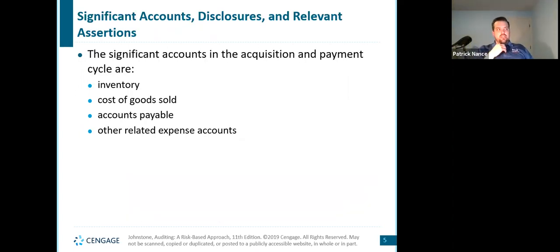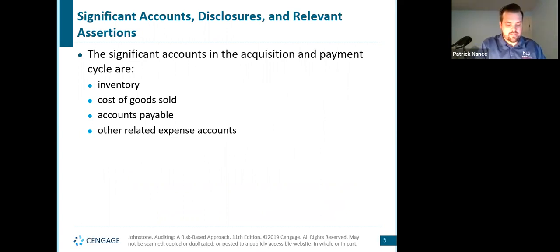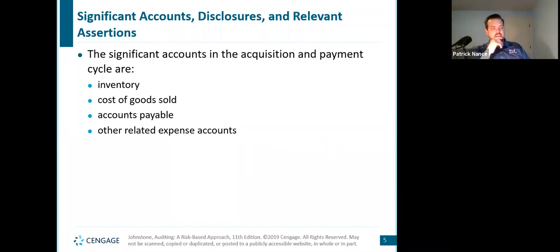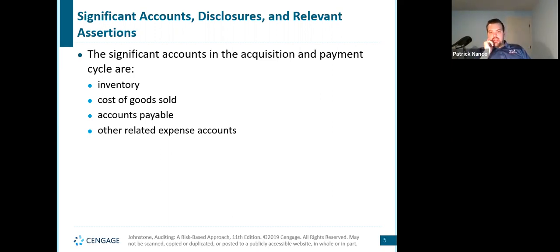So the significant accounts — and we'll talk about most of these individually throughout the chapter — but inventory is always a big part of most companies' financial statements. Obviously companies in the service industry less so, but manufacturing facilities and retail facilities have inventory as a substantial part of the balance sheet. Cost of goods sold is another really important element because it's usually a very large portion of expenses. Accounts payable — how much we owe people — liabilities are always obviously important, and then other related expense accounts.